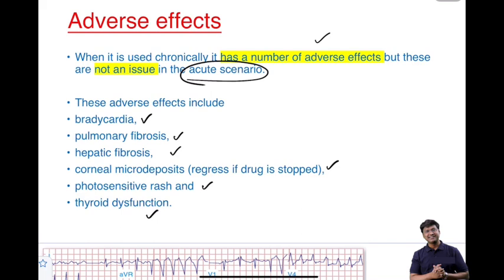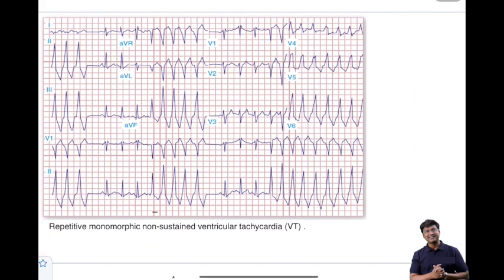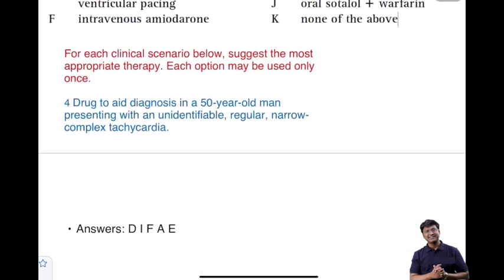Looking at ECGs of short runs of VT — this is a short run of monomorphic, non-sustained VT. When we use the term 'sustained VT,' the duration of the VT must be more than three seconds.